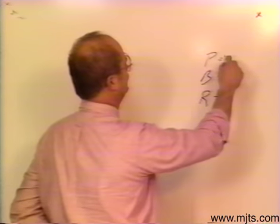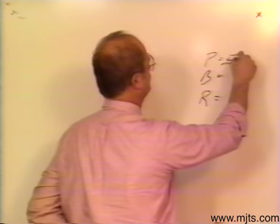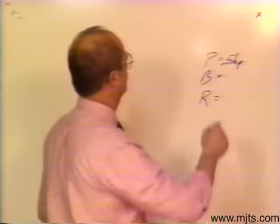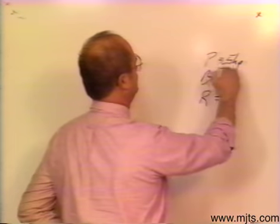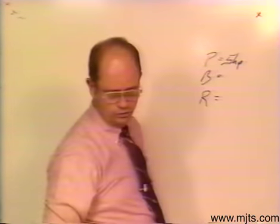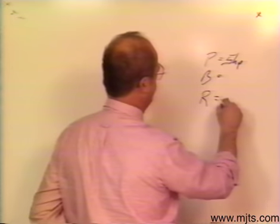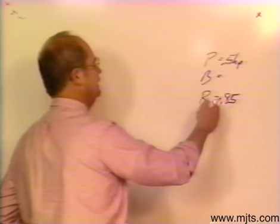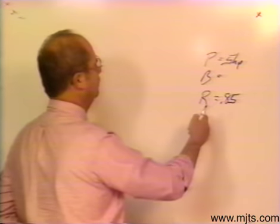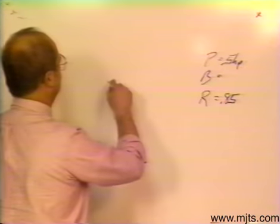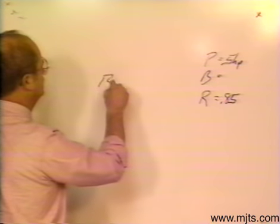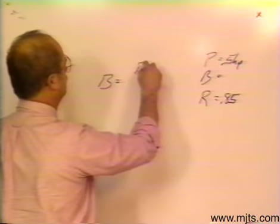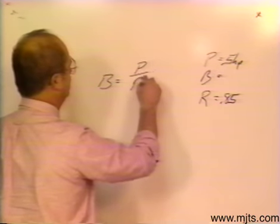Here we know the part, we're talking 5 horsepower. Is that in my picture? Yeah. Okay, we're working with 5 horsepower. The base is what we're looking for. We know that the rate is .85 or 85%. So what I want to do is find my base and we know the formula for the base is equal to the part divided by the rate.